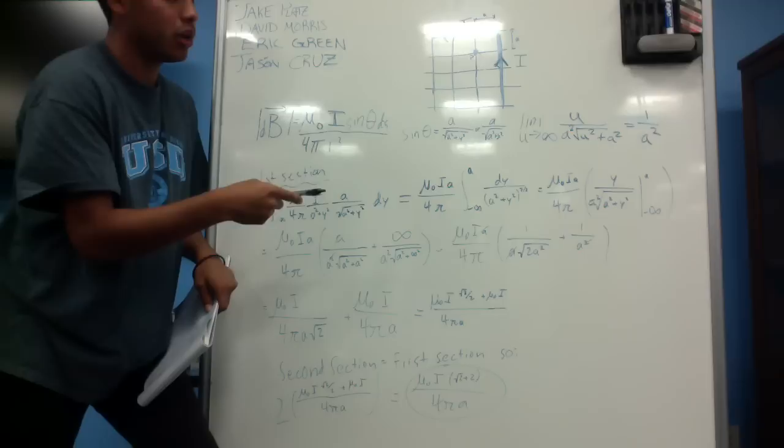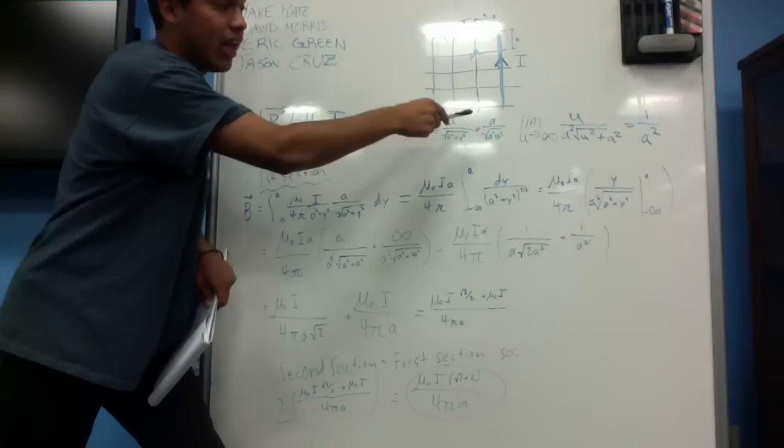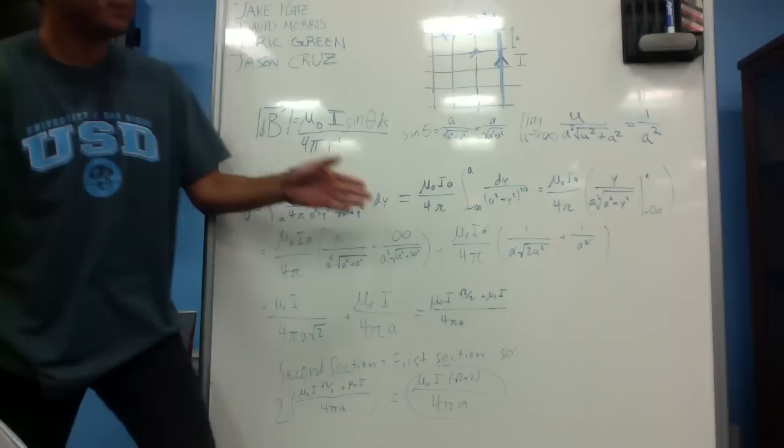opposite over hypotenuse, so a over r, and r being square root of a squared plus y squared. And that's going for this direction up or down, which is in the y direction. So for the x direction as well, it would be a over the square root of a squared plus x squared.